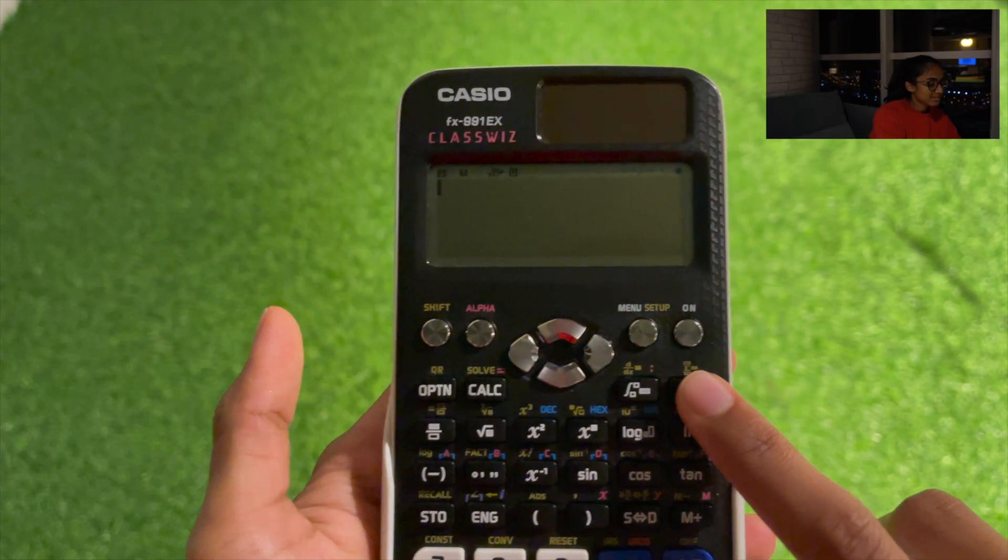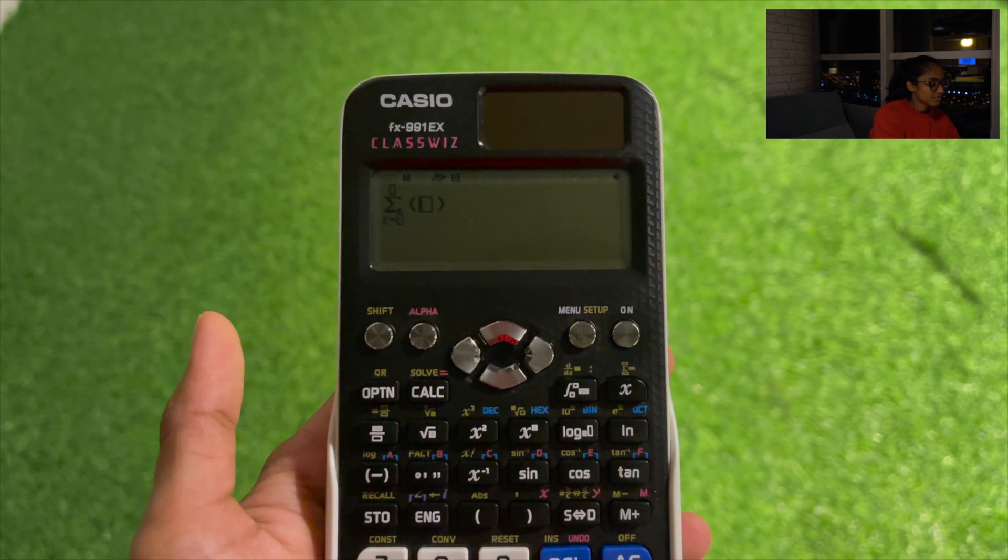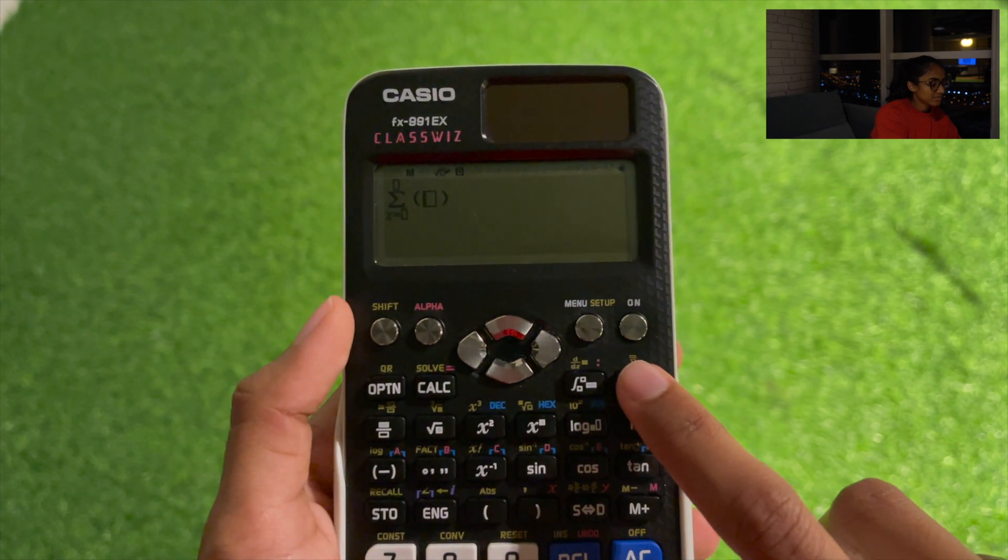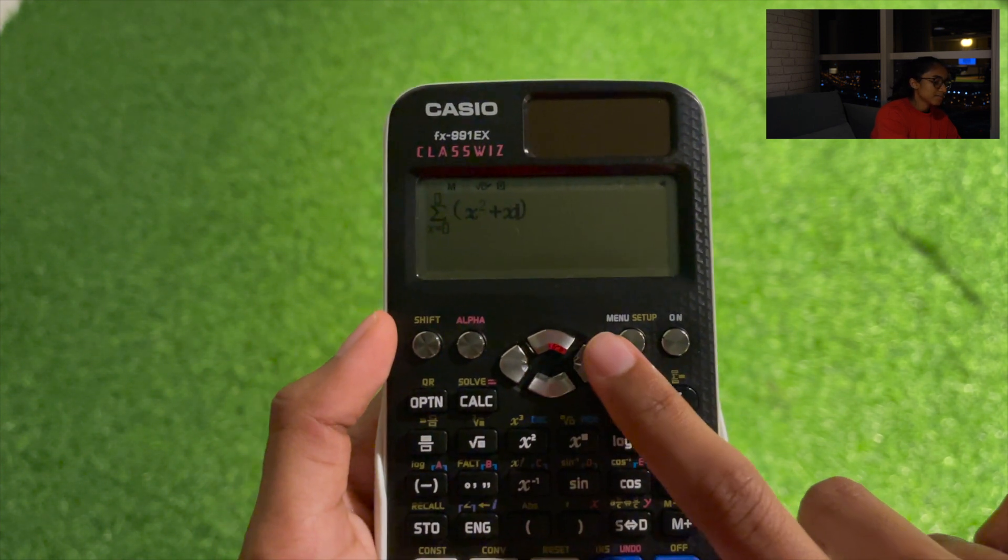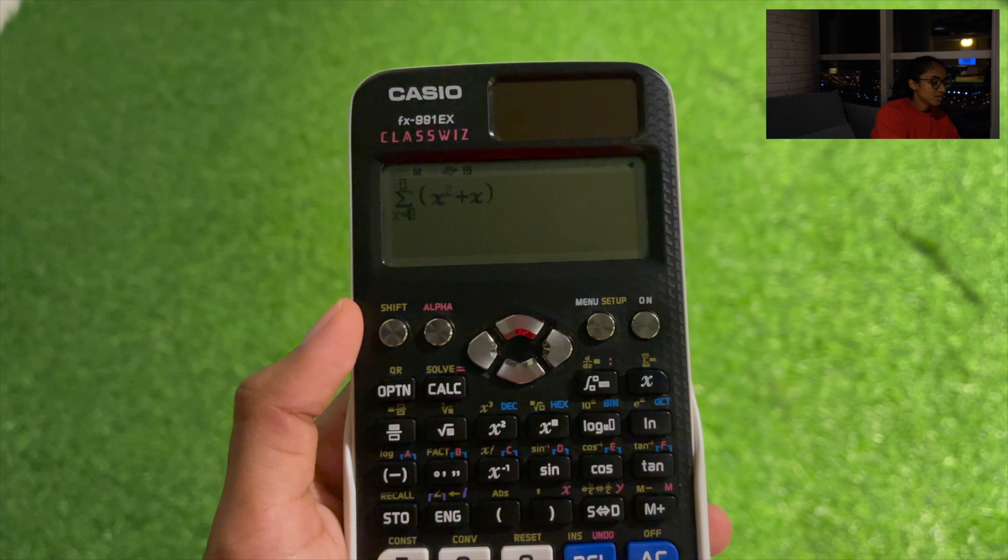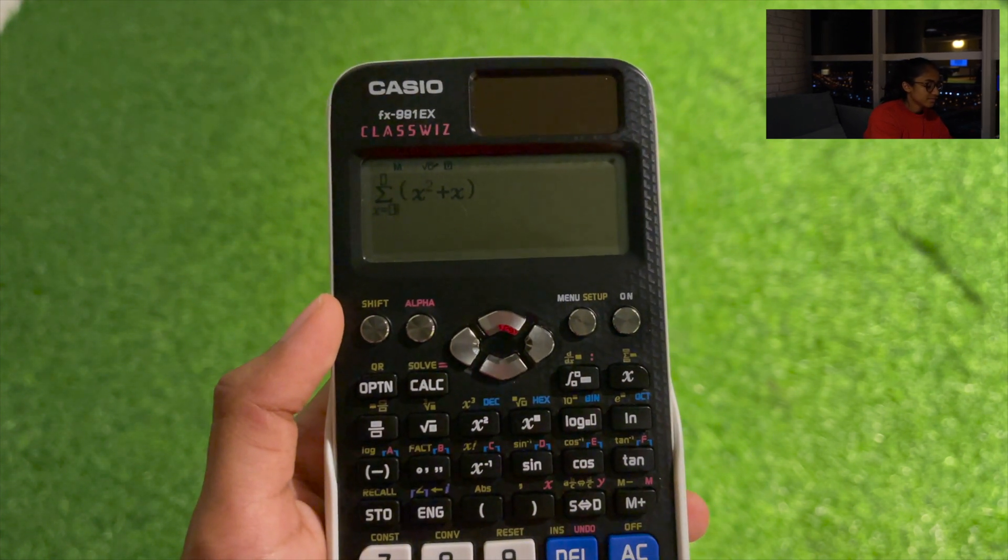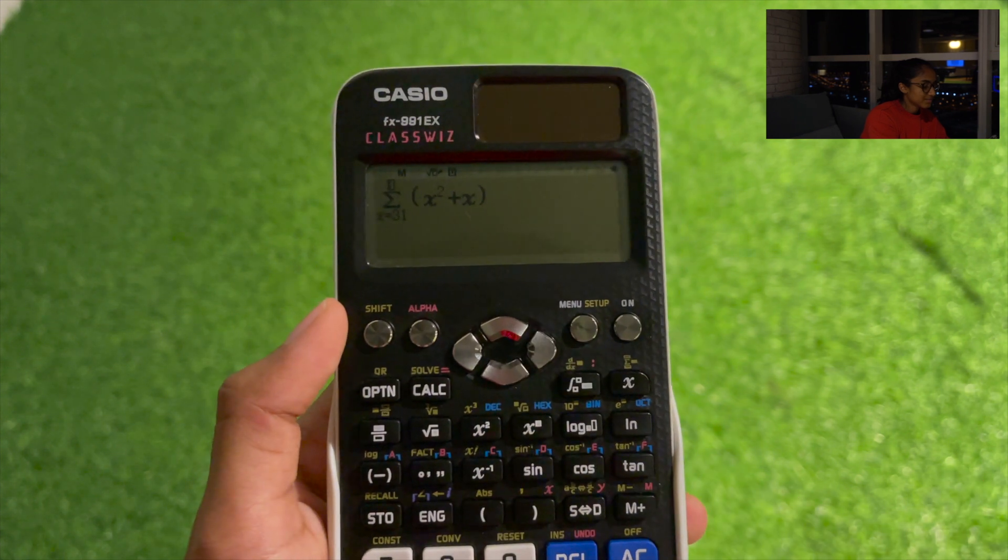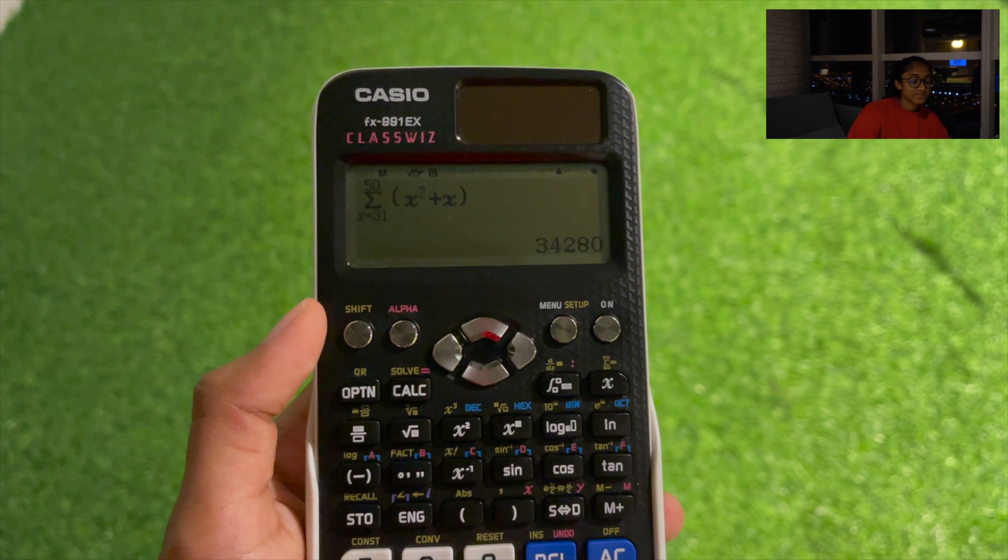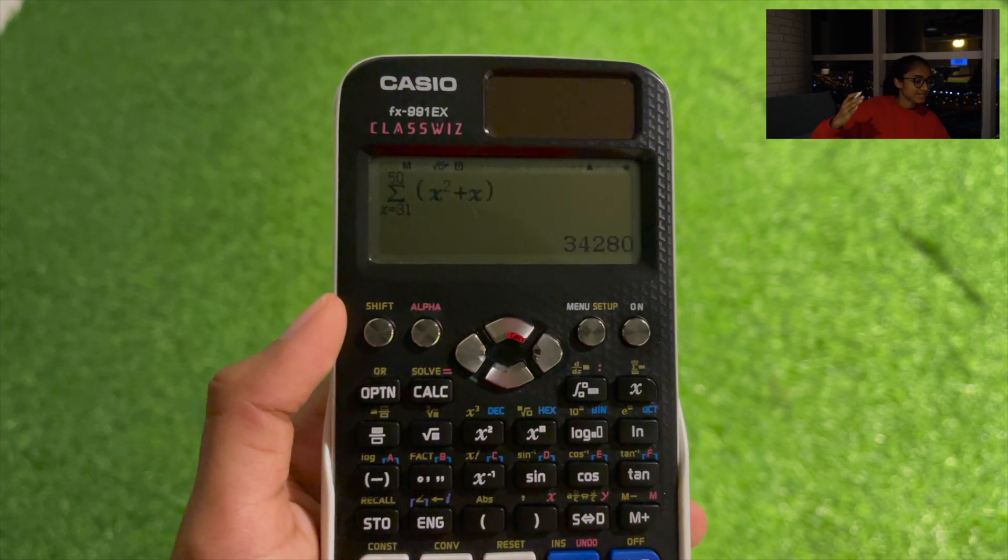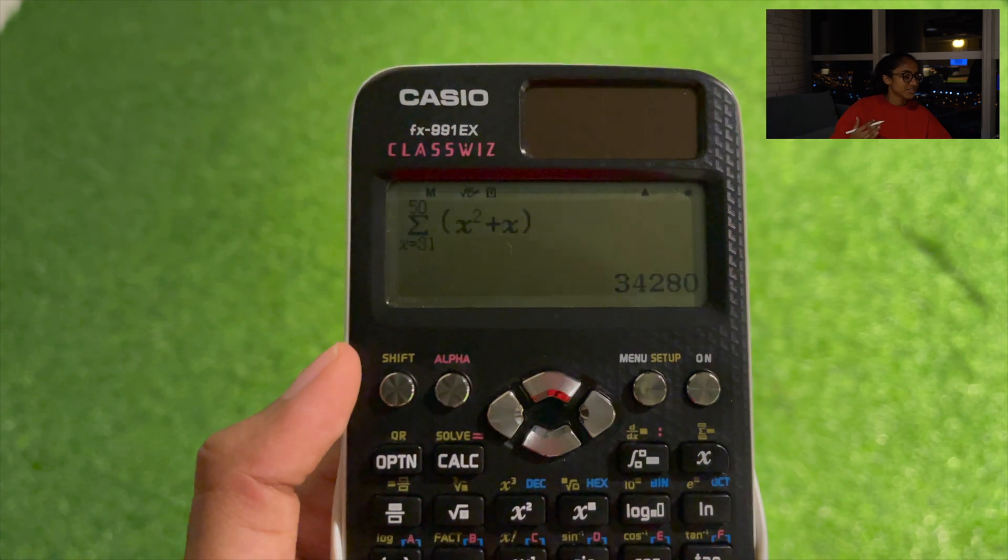So we get the sigma notation on the calculator like this, how I showed you before. Now we're going to type in our function X squared plus X. Then we're going to put in our lower limit, which is 31, and our upper limit as 50. And we're going to press equal to get our result, our answer, our final value, 34,280.